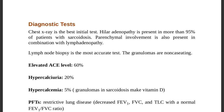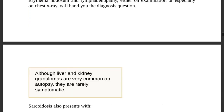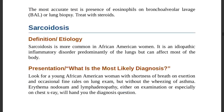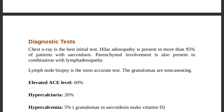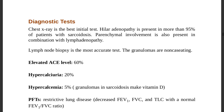Granulomas in sarcoidosis are non-caseating — distinguishing them from TB, which shows caseating (caseous) necrosis. Elevated ACE levels are found in about 60 percent of patients. Hypercalciuria occurs in about 20 percent, and hypercalcemia in about 5 percent of cases.